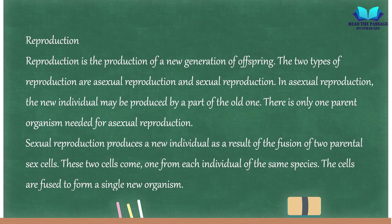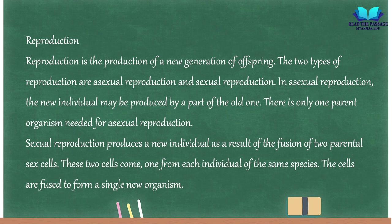Reproduction is the production of a new generation of offspring. The two types of reproduction are asexual reproduction and sexual reproduction. In asexual reproduction, the new individual may be produced by a part of the old one; only one parent organism is needed. Sexual reproduction produces a new individual as a result of the fusion of two parental sex cells — one from each individual of the same species — to form a single new organism.